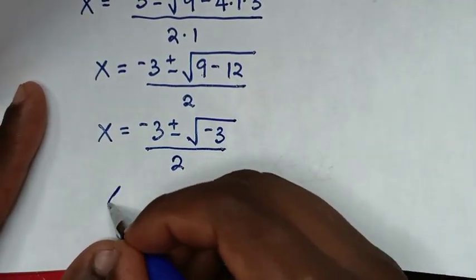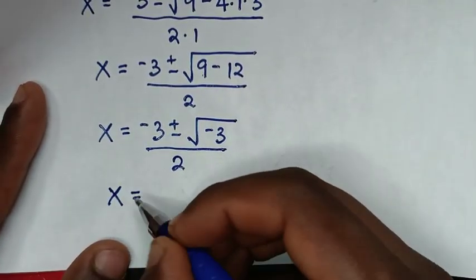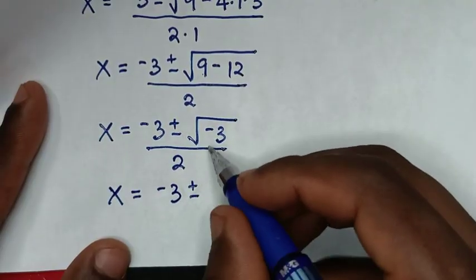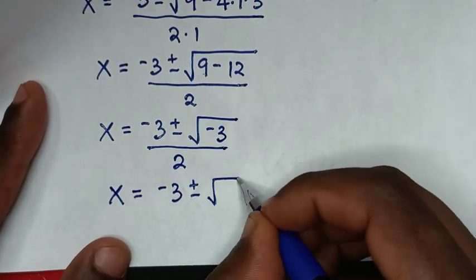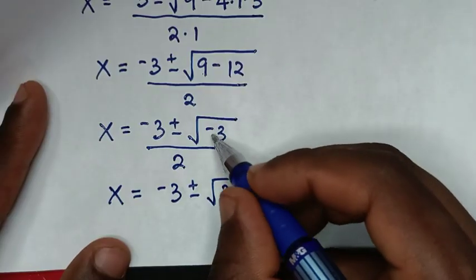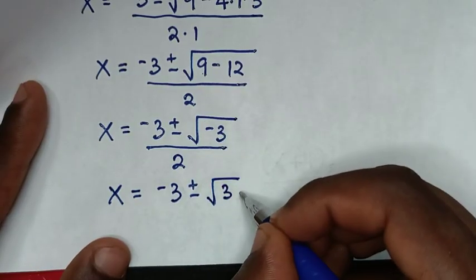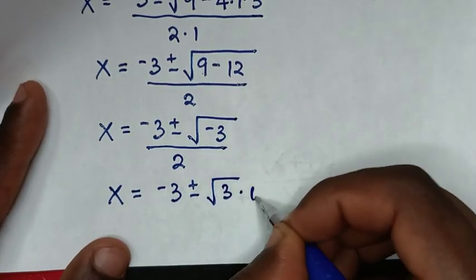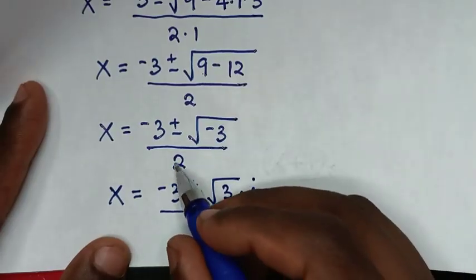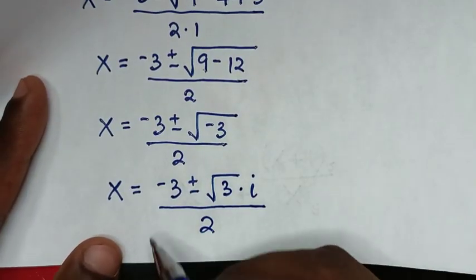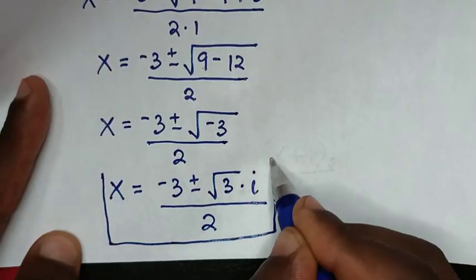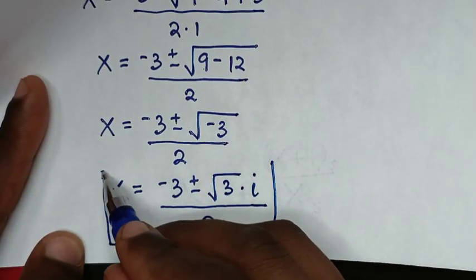So x = (−3 ± √3 · i)/2, where i = √(−1). This is one set of values of x from the problem — complex roots.